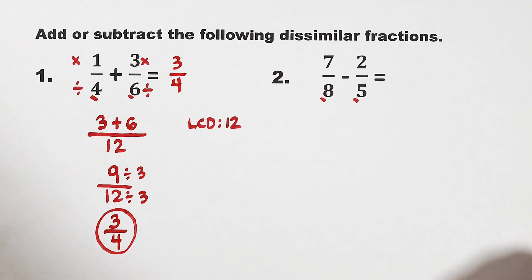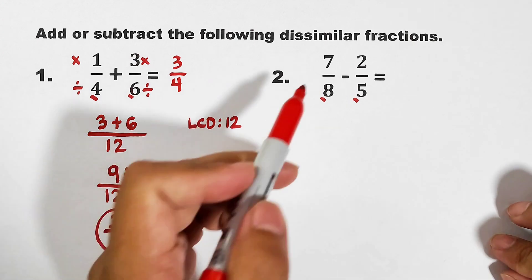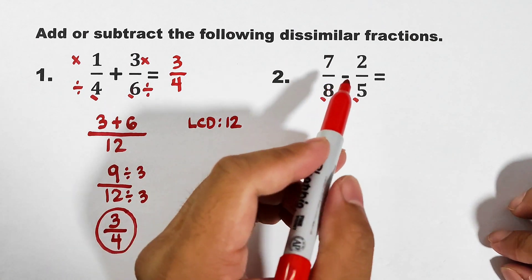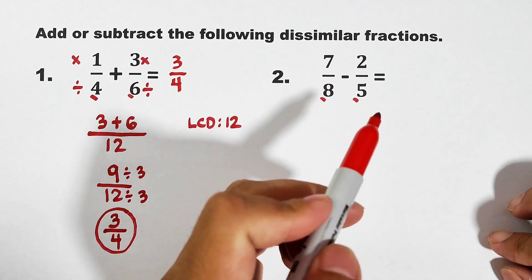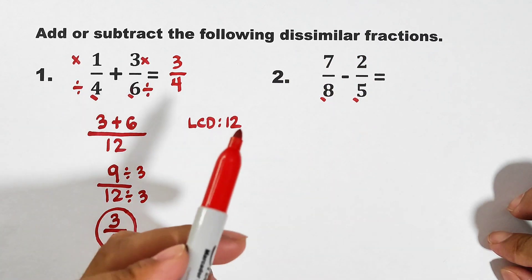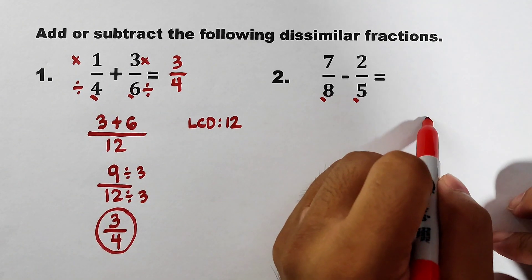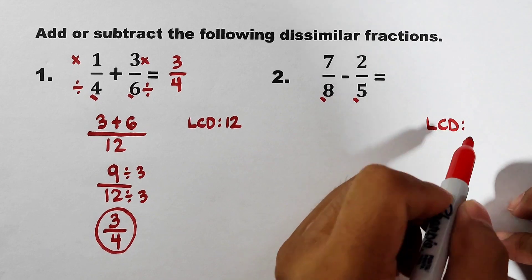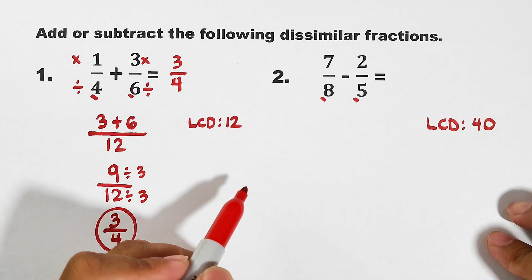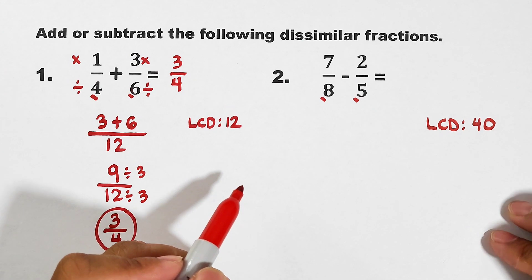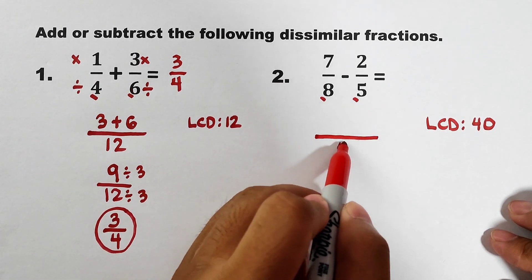Now let's move on with item number 2. In this case, this one is subtraction naman. 7 over 8 minus 2 over 5. Your denominators are 8 and 5. So what is LCD? The LCD is equal to 40. The least common denominator is 40. So you will place it here. By the way, if you don't know how to get an LCD, guys, you can watch our videos.